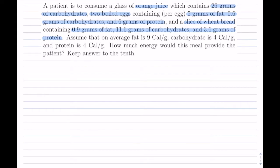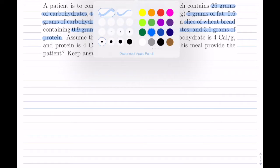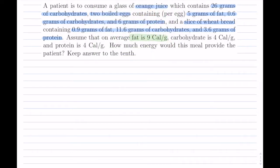Assume that on average, we now have the values for fat, carbohydrate, and protein — so we have that in full.